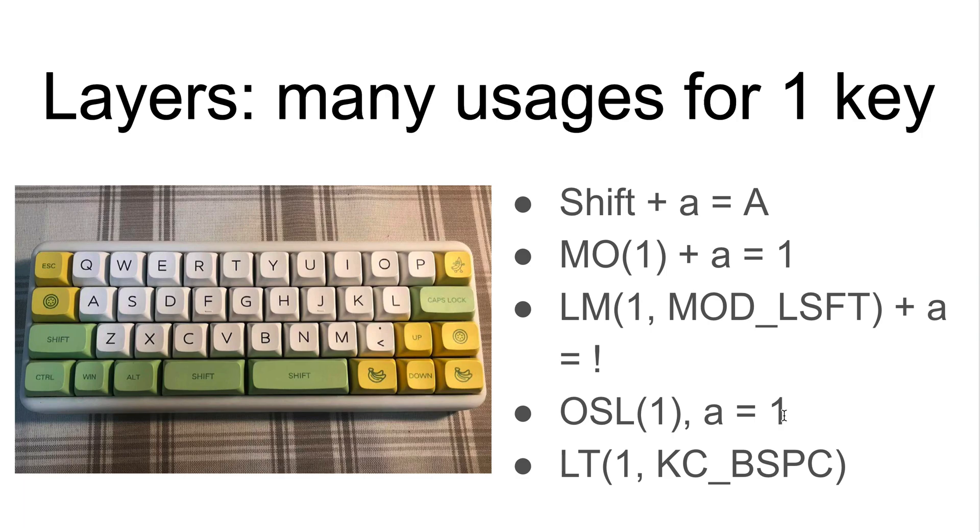There are other tricks for the layers. This is related to the previous trick. You can see tap and hold are two different modes to use a key. So we can define one key such that when you press and hold it, it triggers another layer, say layer number 1. But when you just tap it, it is just one other key. For example, this specific code means the backspace key. So when you just press this one you get backspace. But when you hold this one, it triggers layer number 1.